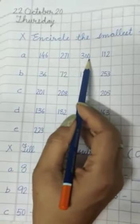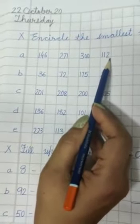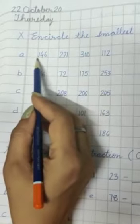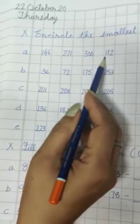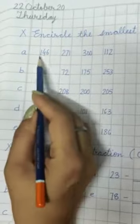146, 271, 300, 112. We are going to check the first digit. This is 1, this is 2, this is 3, this is 1 again. So we have two numbers with 1.